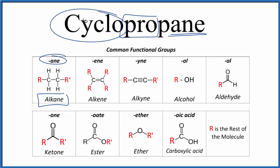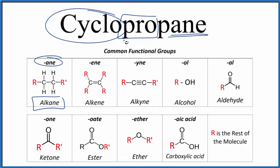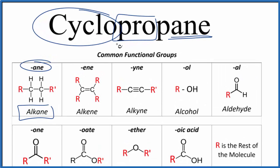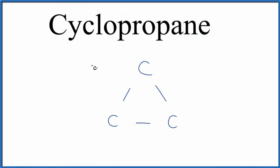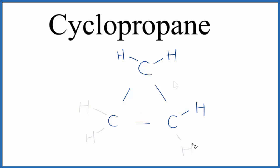Finally, 'cyclo' means they're going to be in a ring. So let's put three carbon atoms in a ring and put hydrogens around them. Since carbon always has four bonds, we can put bonds off here and put our hydrogens. So this carbon here has one, two, three, four bonds, and so on.